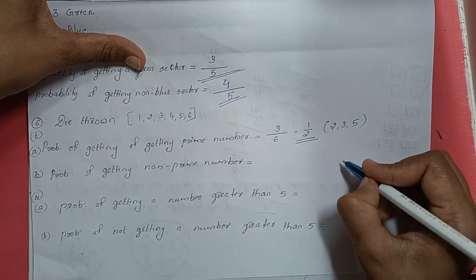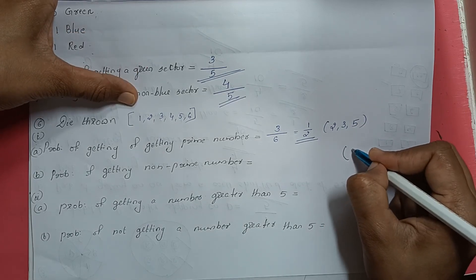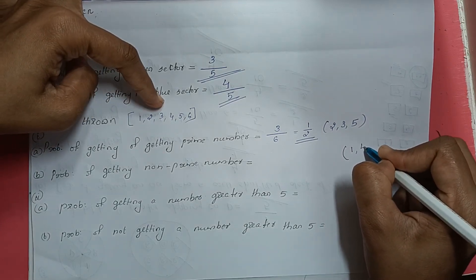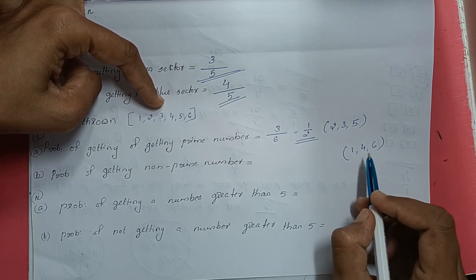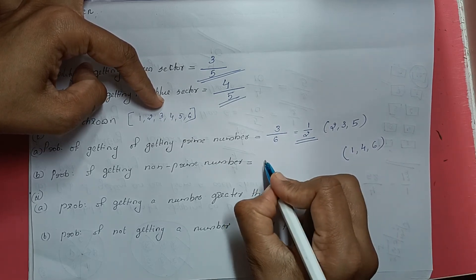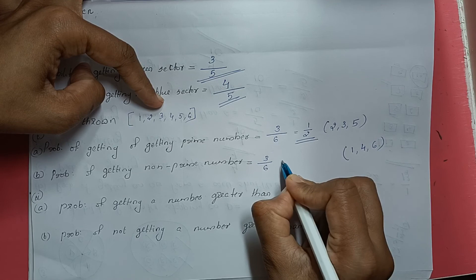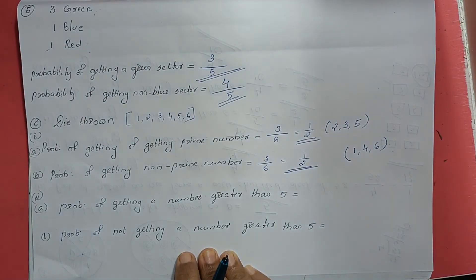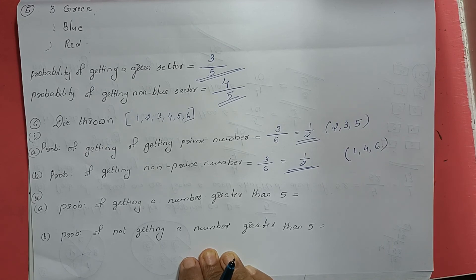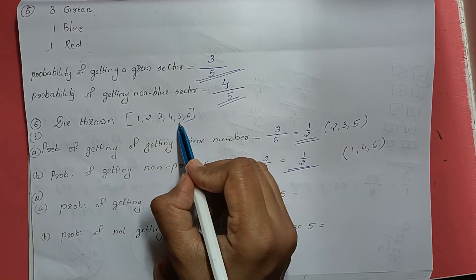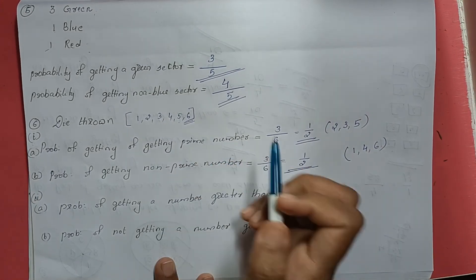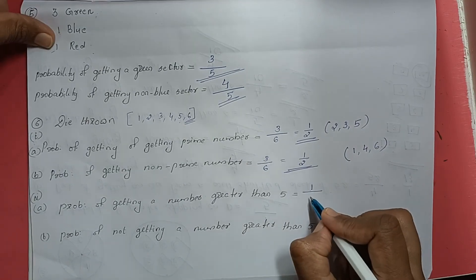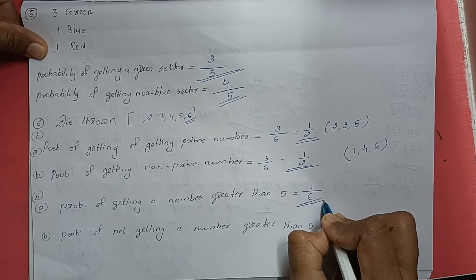Probability of getting a non-prime number: 1 is not a prime number, 4 is a composite number, 6 is a composite number — that is also 3 numbers divided by total 6, which equals 1 by 2. Next, probability of getting a number greater than 5: only 6 is greater than 5, so 1 divided by 6. The probability is 1 by 6.